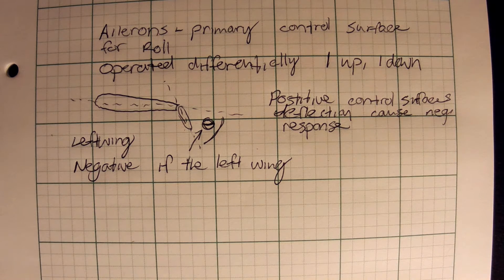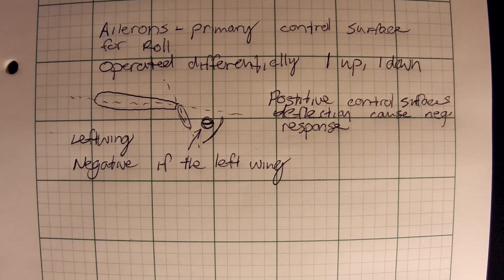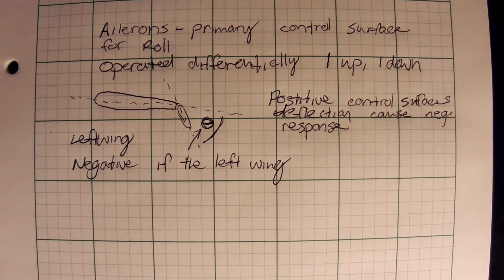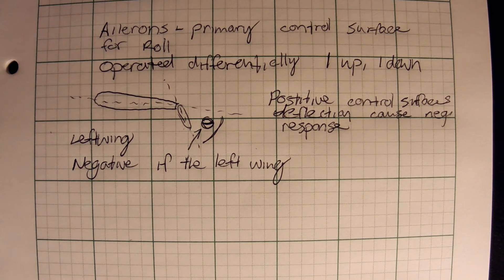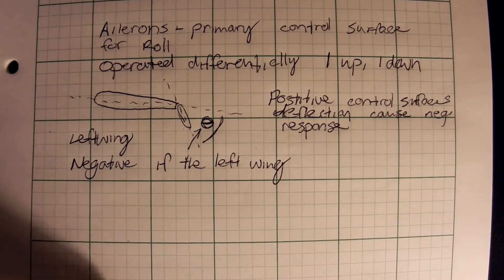This sign convention holds true for the elevator and rudder as well. Also worth noting: the ailerons do not directly change the roll angle — they control the roll rate, the rate at which the roll angle changes. So if you leave the ailerons deflected, the airplane will keep rolling. Typically, you deflect the ailerons until you reach your desired roll angle, then return them to neutral.